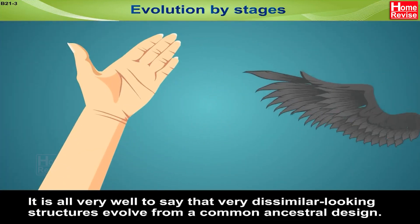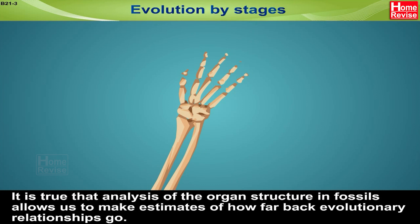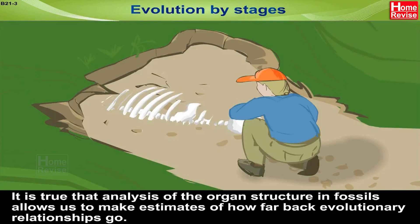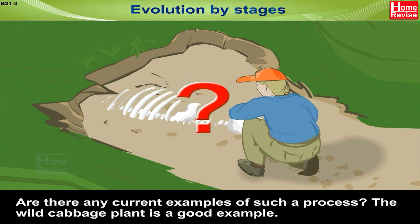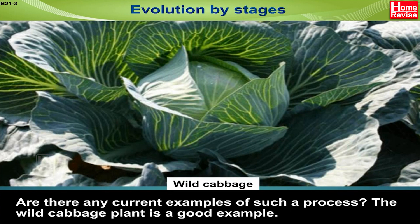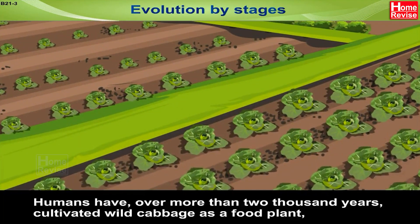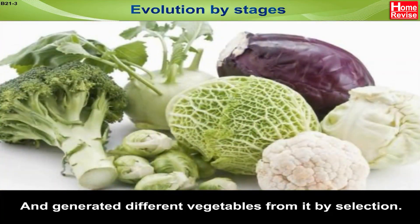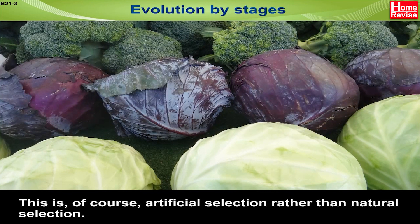It is all very well to say that very dissimilar looking structures evolve from a common ancestral design. Analysis of organ structure in fossils allows us to estimate how far back evolutionary relationships go, though those are guesses about what happened in history. The wild cabbage plant is a good example of current selection. Humans have over more than 2,000 years cultivated wild cabbage as a food plant and generated different vegetables from it by selection — this is artificial selection rather than natural selection.